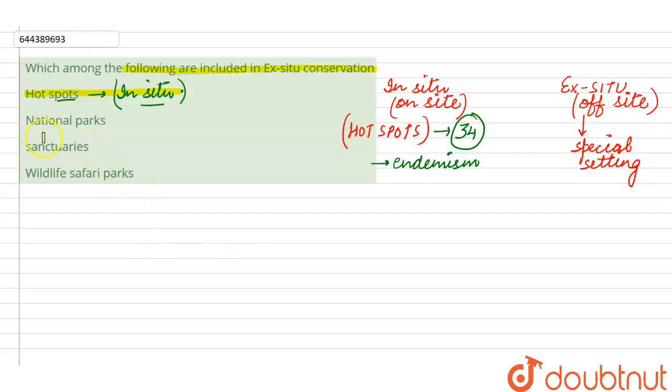Now, the next option here is the national parks. While we see that the national parks, biosphere reserves and sanctuaries. So national parks, total number of national parks are 90 in number, whereas sanctuaries, they are a total number of 448 and these two are the approach for the in situ conservation because in national parks, the animals are conserved there itself in their natural habitat.